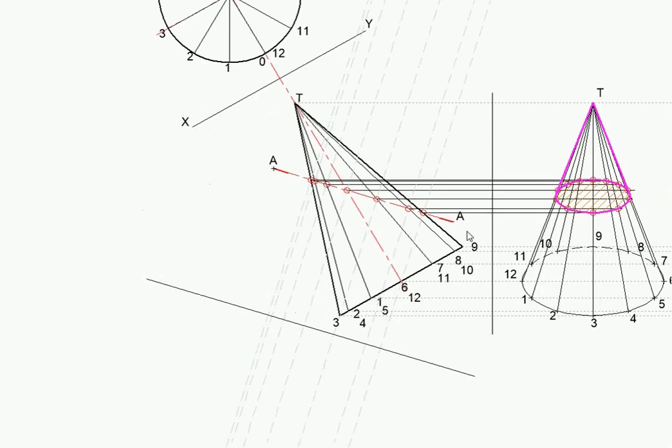Just take note that in this case they don't just want the true shape. The question that has been asked is that they want the view. The question actually reads: a view showing the true shape of the cut surface as seen in the direction of arrow Z. Not just a true shape, a view showing the true shape.